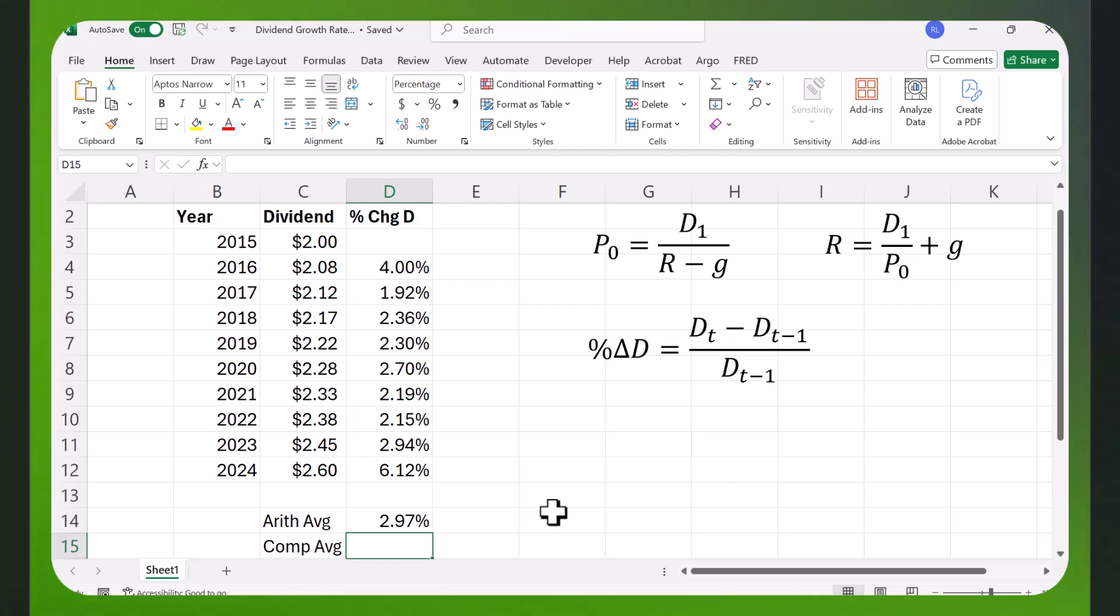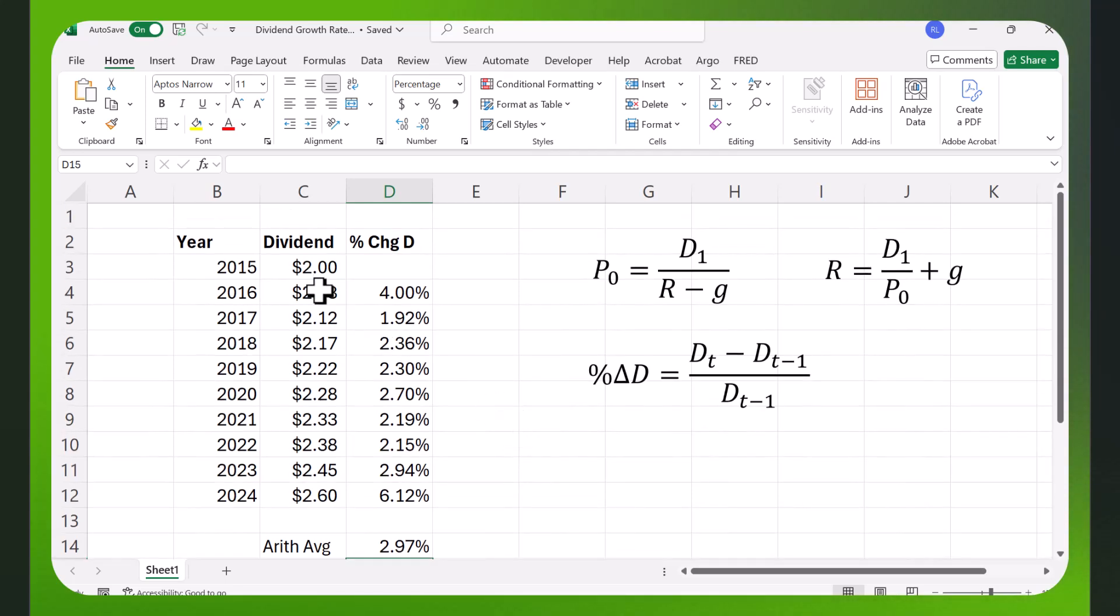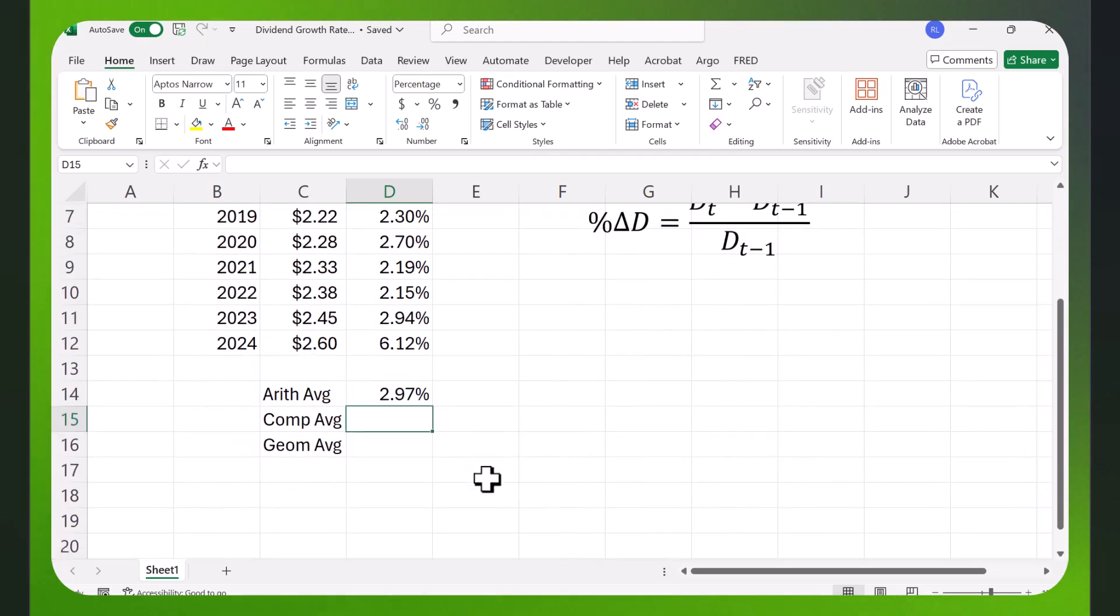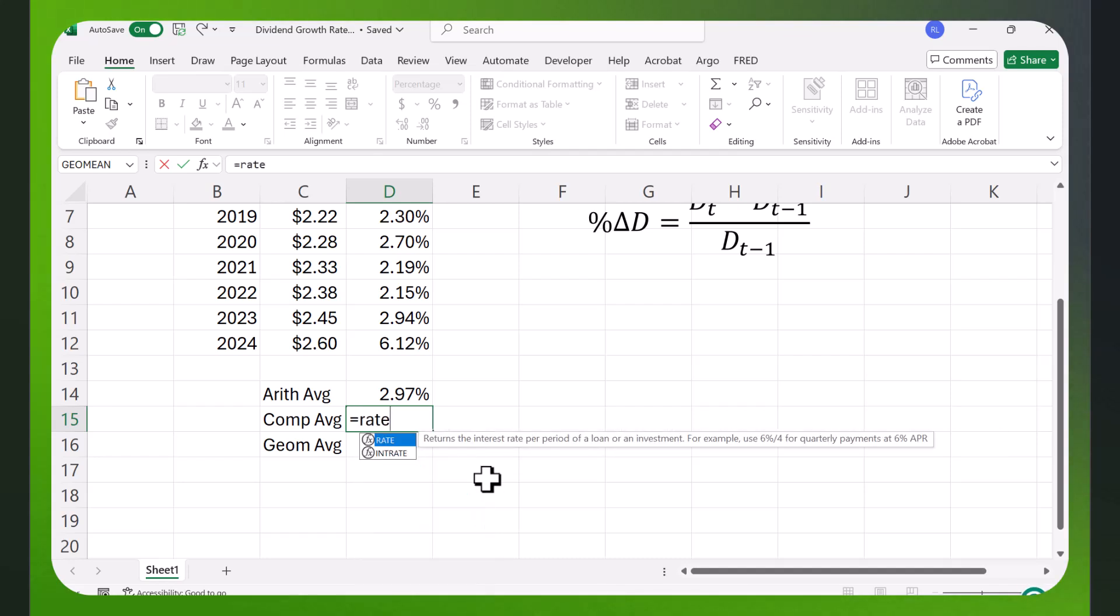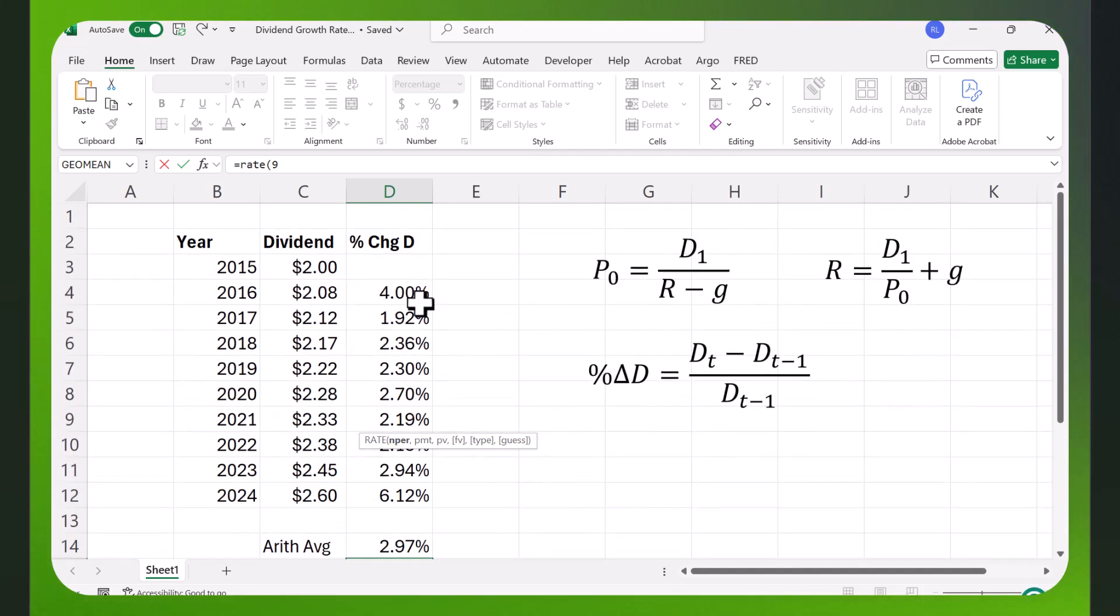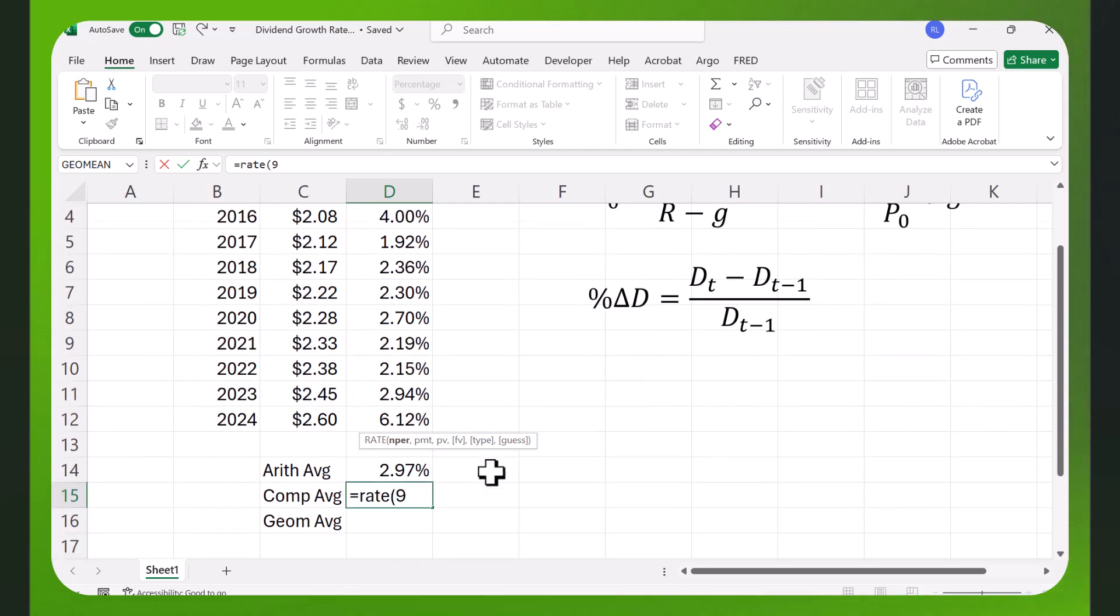The second way you can do it is by assuming that the dividends are compounding. You start with $2.00 in 2015 and you wind up with $2.60 in 2024. In this case, we can use the rate function in Excel. The number of periods is 9. Again, even though there are 10 numbers, remember there are only 9 changes in the dividend. It's asking for PMT, which is the annuity. There is no annuity, so just put in a 0.